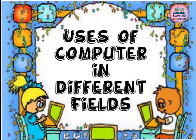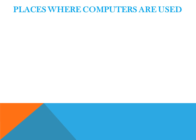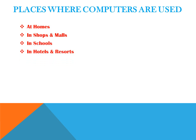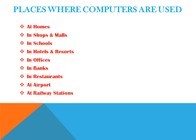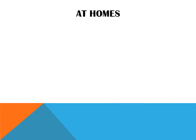Now we are going to learn about different uses of computer in different fields. The places where computers can be used are: at homes, in shops and malls, in schools, in hotels and resorts, in offices, in banks, in restaurants, and at airports and railway stations.